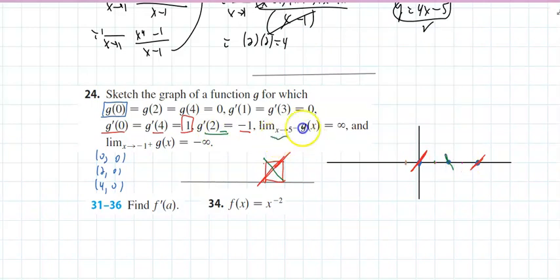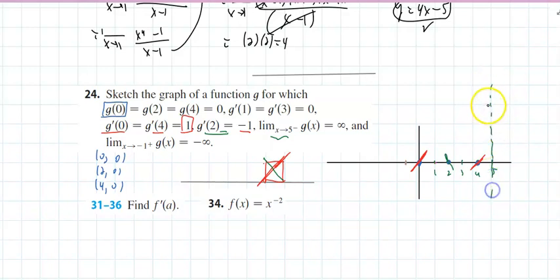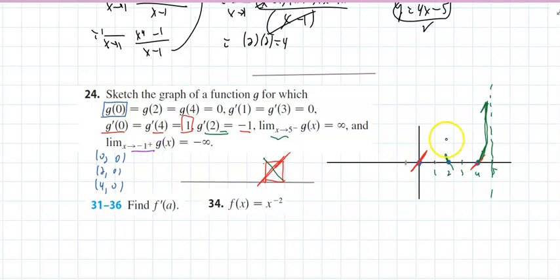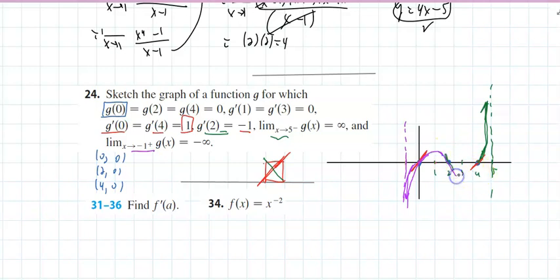The limit as x approaches 5 from the left is infinity — that means the graph runs up this way. And the limit as x approaches negative 1 from the right is negative infinity.